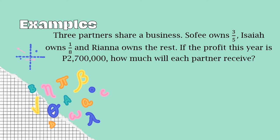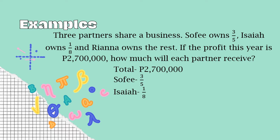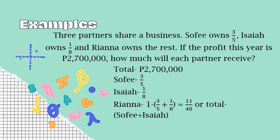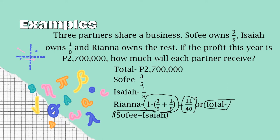So first, let's write down our givens. We have the total, which is 2,700,000. Sophie owns 3/5 of that, Isaiah owns 1/8 of that. For Rihanna, it's 1 minus 3/5 plus 1/8. Basically, from the total 2,700,000, you subtract Sophie's and Isaiah's shares to get Rihanna's. So Rihanna's part is 11 over 40. You can either use that fraction or do the subtraction — either of the two works.